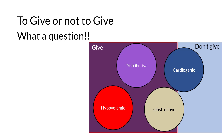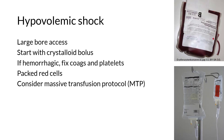Hypovolemic shock is easy — lose volume, give volume back. Get a couple of large-bore IVs in and give a liter or two of crystalloid. If a hemorrhagic etiology is suspected, it's important to ensure that coagulation studies and platelets are okay. A good rule of thumb is to keep the INR less than 2.0 and platelets greater than 50. You will likely need some packed red cells as well. Remember that the serum hemoglobin is going to lag the shock state, so if the patient is actively bleeding with a normal-ish hemoglobin, it won't stay normal-ish for long without red blood cell transfusion.